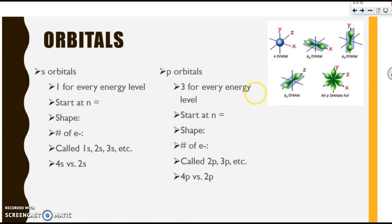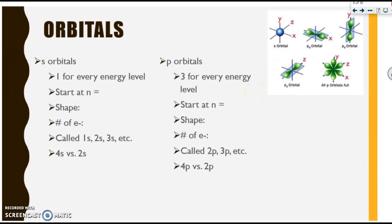The first type of orbital is an S orbital. You can see a picture of that here. There is one for every energy level. They start at energy level number one. They are spherical in shape and they contain a maximum of two electrons. These are called the 1S, the 2S, 3S, so on and so forth. If you were asked to compare a 4S to a 2S, your 4S orbital is going to be larger than your 2S, but because they are both S, they would be the same general shape.